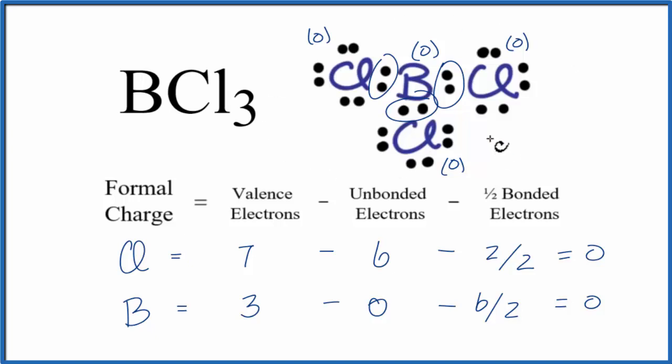So all of our formal charges are 0. And that means this is the more favorable or likely Lewis structure for BCl3. You might be tempted to try to form a triple bond between the chlorine and the boron to try to give the boron an octet.